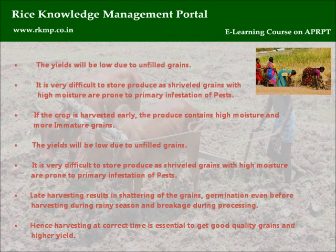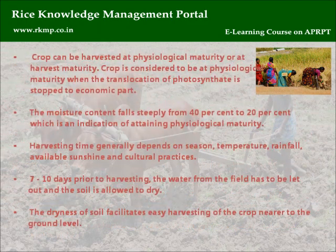It is very difficult to store produce, as shriveled grains with high moisture are prone to primary infestation of pests. Late harvesting results in shattering of the grains, germination even before harvesting during rainy season, and breakage during processing. Hence, harvesting at the correct time is essential to get good quality grains and higher yield. The crop can be harvested at physiological maturity or at harvest maturity.